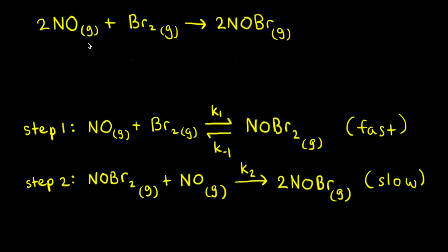The pre-equilibrium approximation is used to find the rate law for a mechanism with a fast initial step. As an example, let's look at the reaction between nitric oxide and bromine.